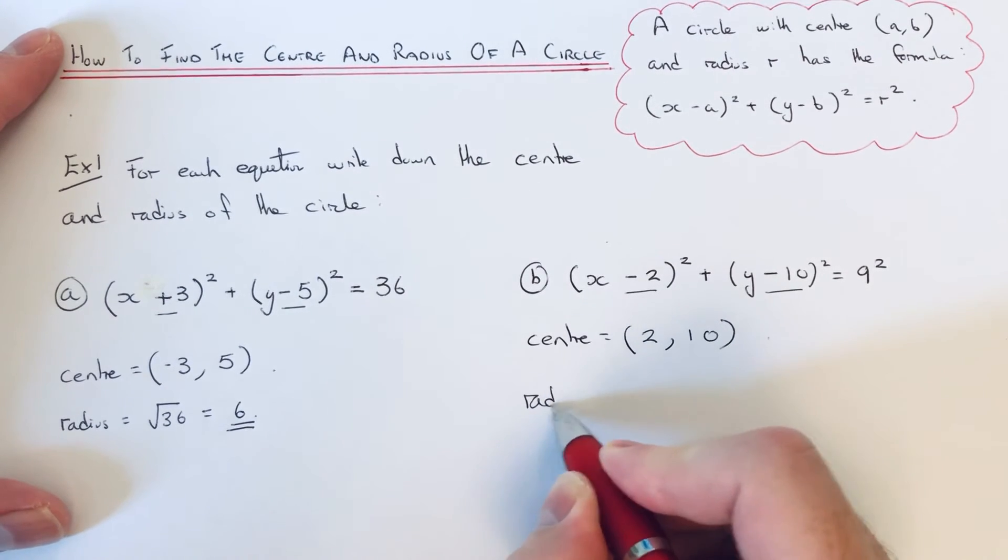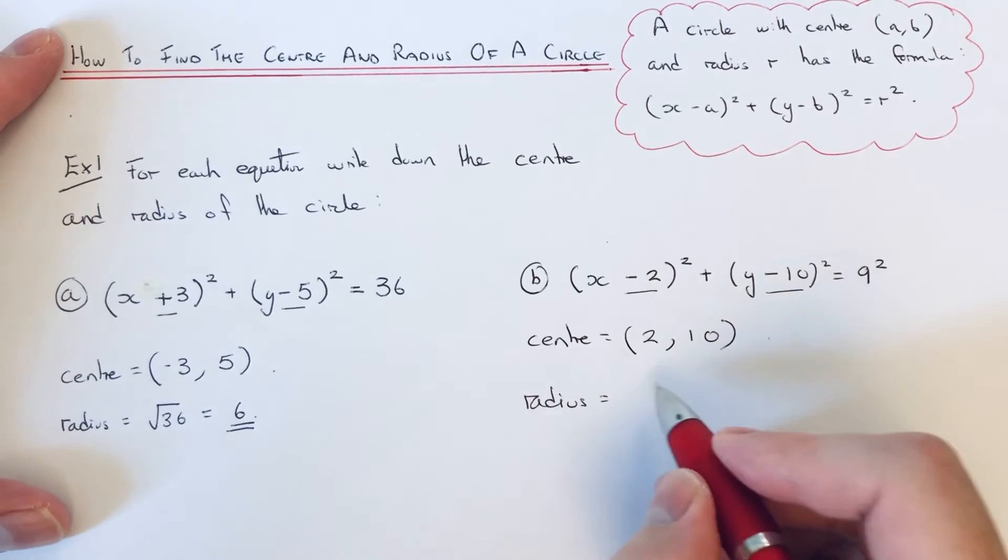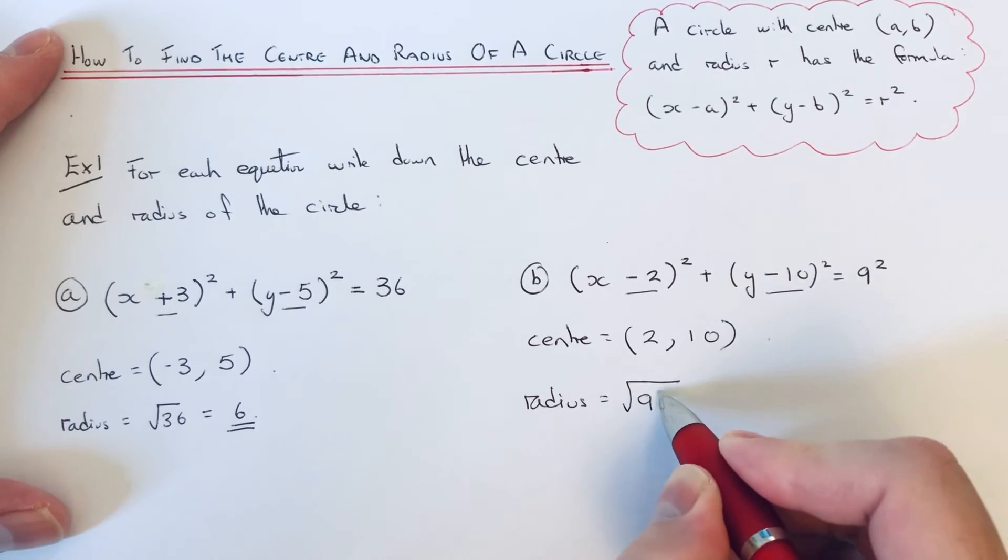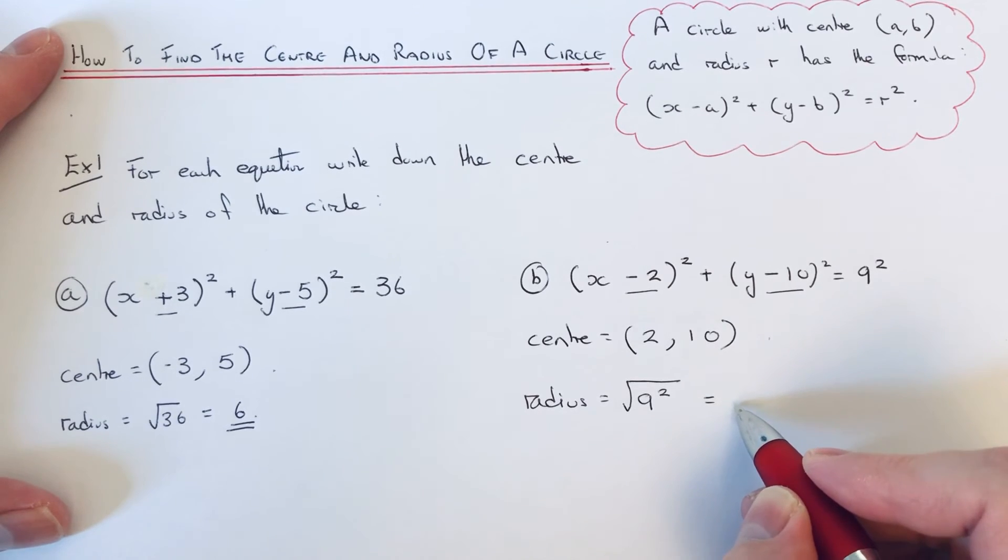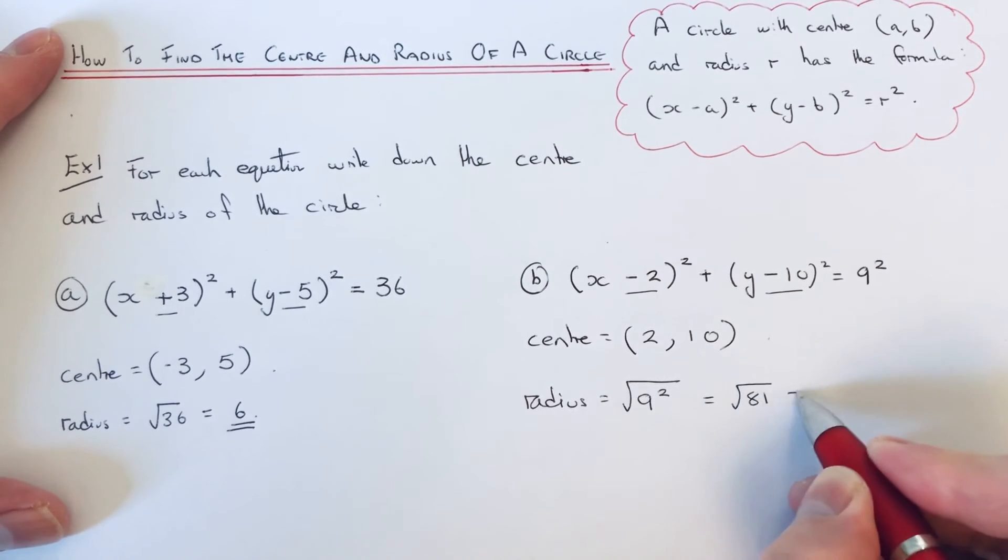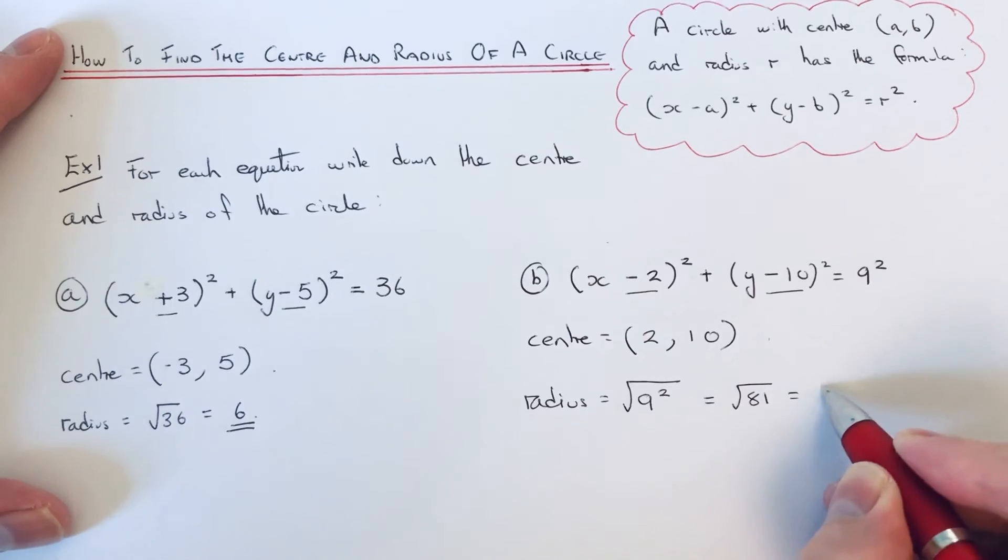And then to get the radius of the circle, we just need to square root the number at the end. So 9 squared is 81, and then we need to square root 81, which again is 9.